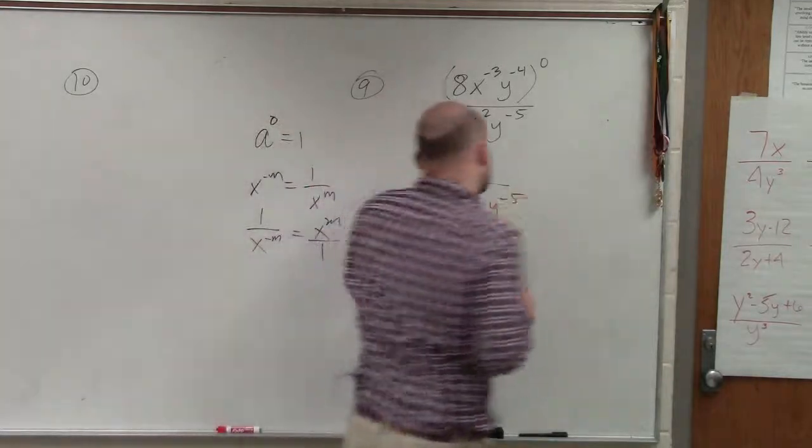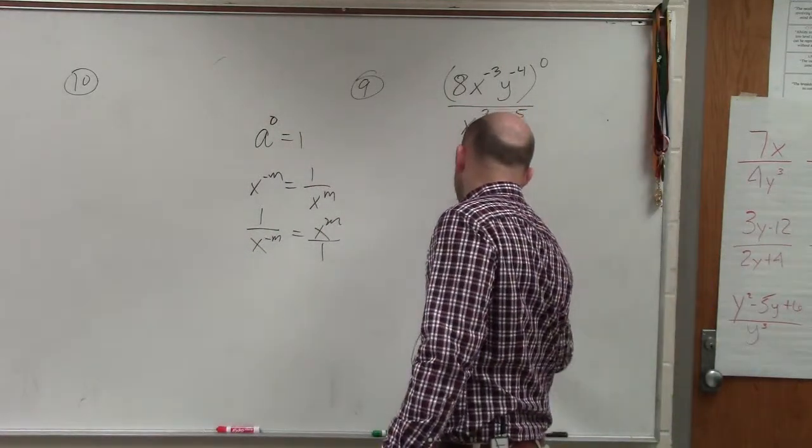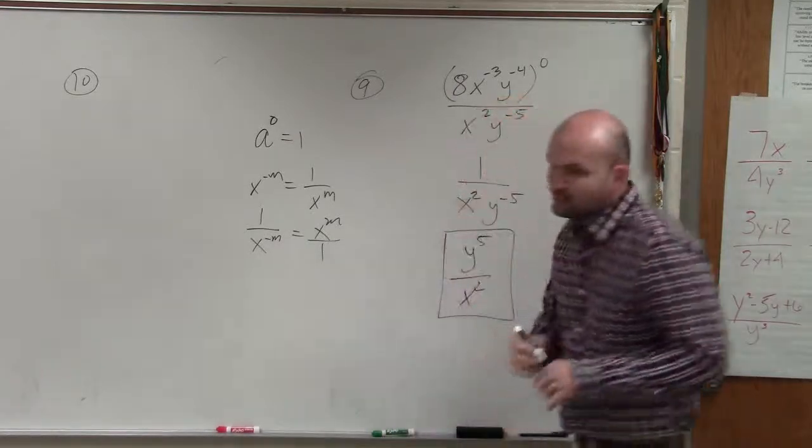So therefore, y to the negative fifth, to write this as positive, is going to be y to the fifth over x squared. And that would be your final answer.